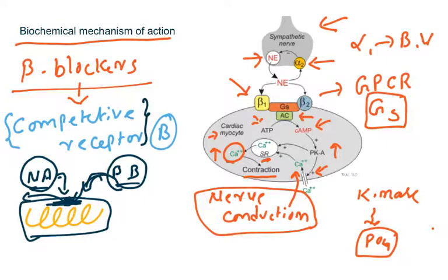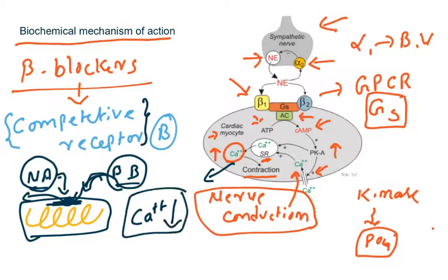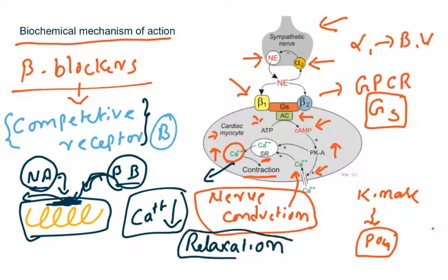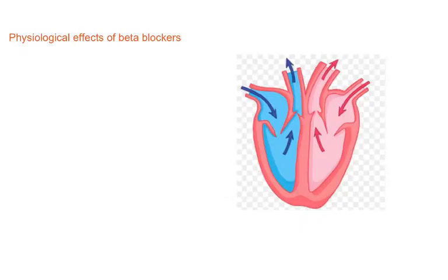They are antagonists because they block the effects of noradrenaline. Beta receptor activation increases calcium, which causes contraction. If you block these receptors, calcium will not increase, causing relaxation. So the overall biochemical action of a beta blocker is that it reduces calcium levels and causes relaxation.